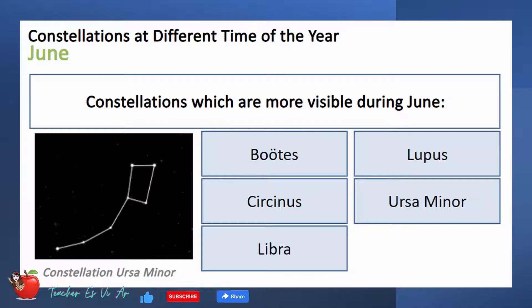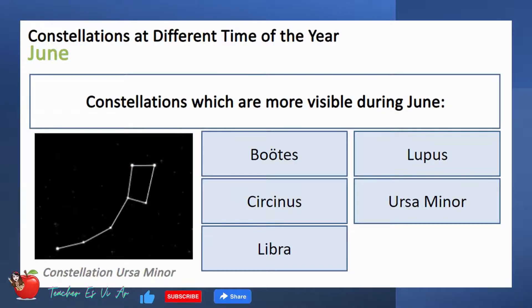Here are the constellations which are more visible during June: Bootes, Lupus, Circinus, Ursa Minor, and Libra.